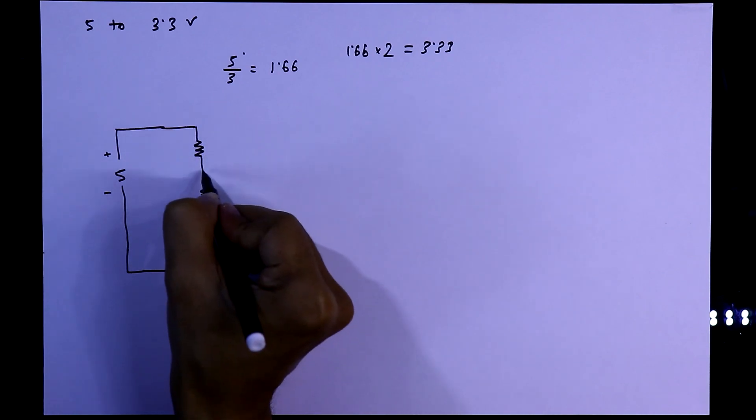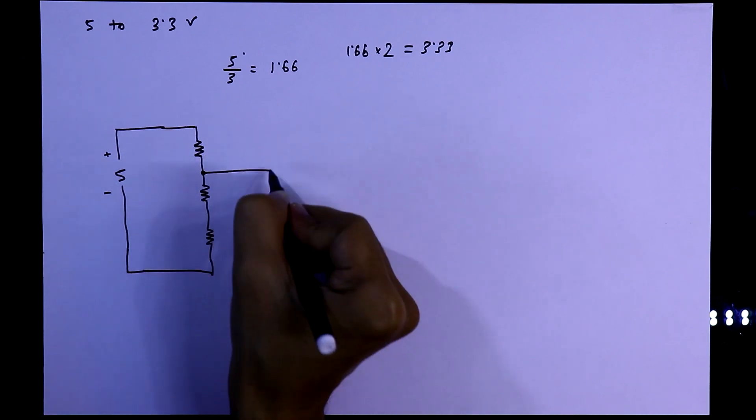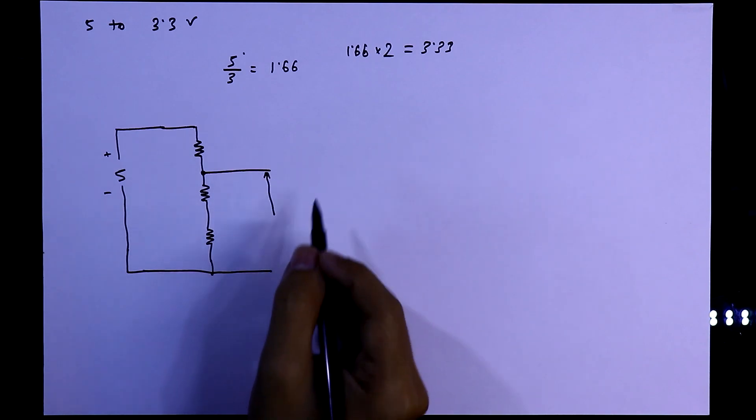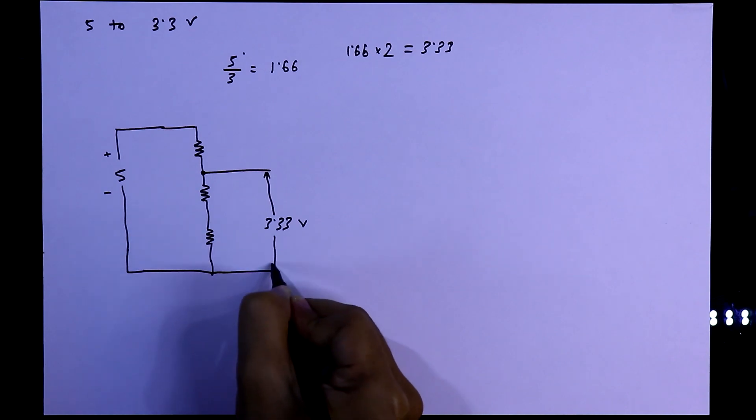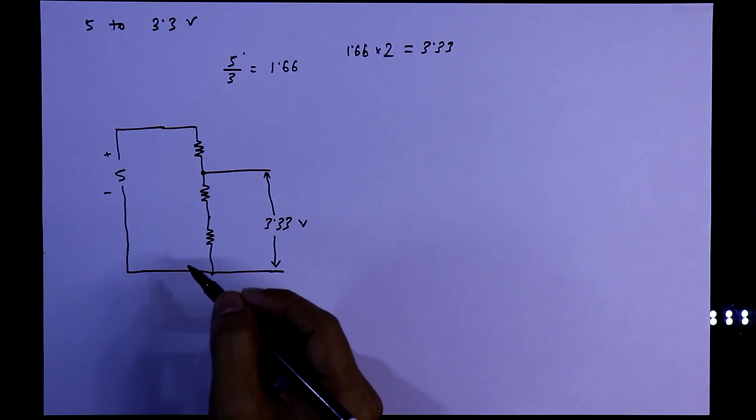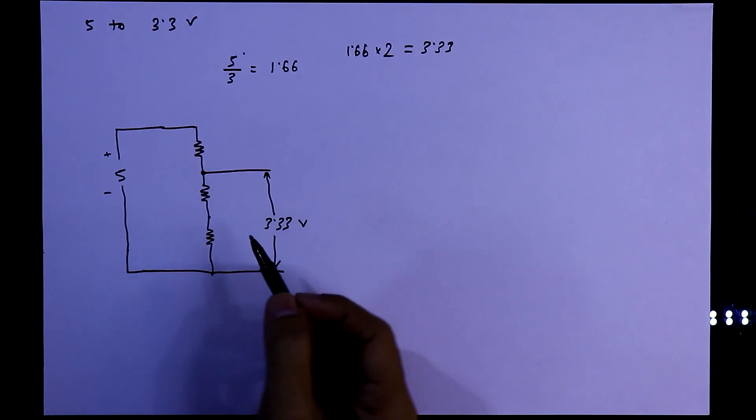So I will use same value resistor. Let's say if we need more currents then I will use 100 ohms resistor. Then at this point obviously we will get 3.33V.